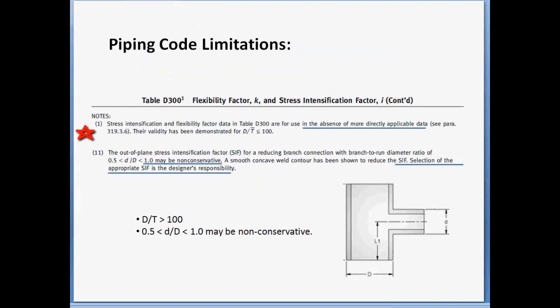Note 1 in Appendix D in B31-3 tells us that SIFs and flexibility factors are valid for D over T ratios less than or equal to 100. Finite element results are not limited by D over T values of 100. Note 1 also tells us that the SIF and flexibility factors in Appendix D are for use in the absence of more directly applicable data. Since the equations in Appendix D were written, there are publicly available documents like WRC 329 and NuReg 5358 that contain more applicable data for SIFs. There's ASME Section 3 NB3200 and EPRI 110996 that contain more applicable data for K-Factors. The question is, when is this data more applicable and when should it be used?